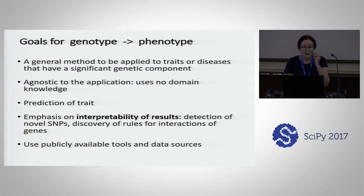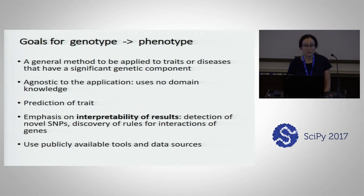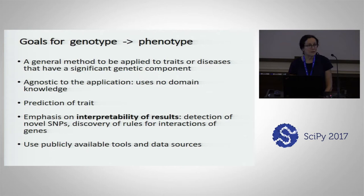Given that there's this opportunity, how can we capitalize on it? It might be nice to have a general method that could be applied to traits or diseases that have a significant genomic genetic component. So if we could take genome alone and predict a phenotype, like a disease or a trait, using only that information and no domain information, this is something that could be used and reused again in a variety of settings.